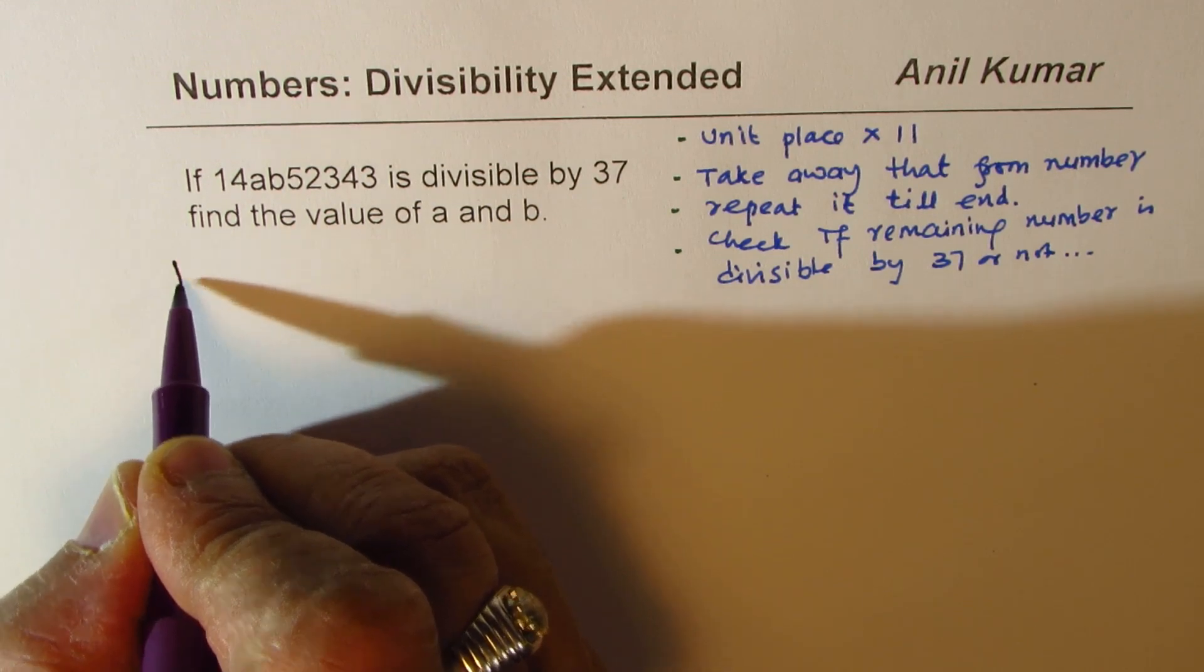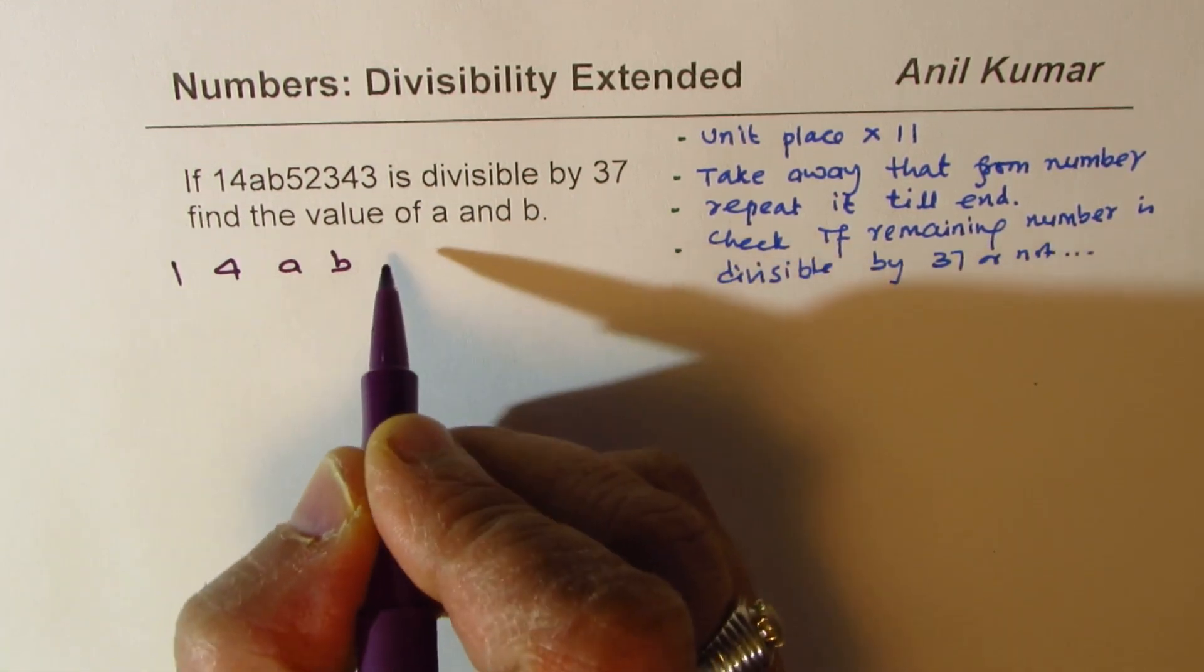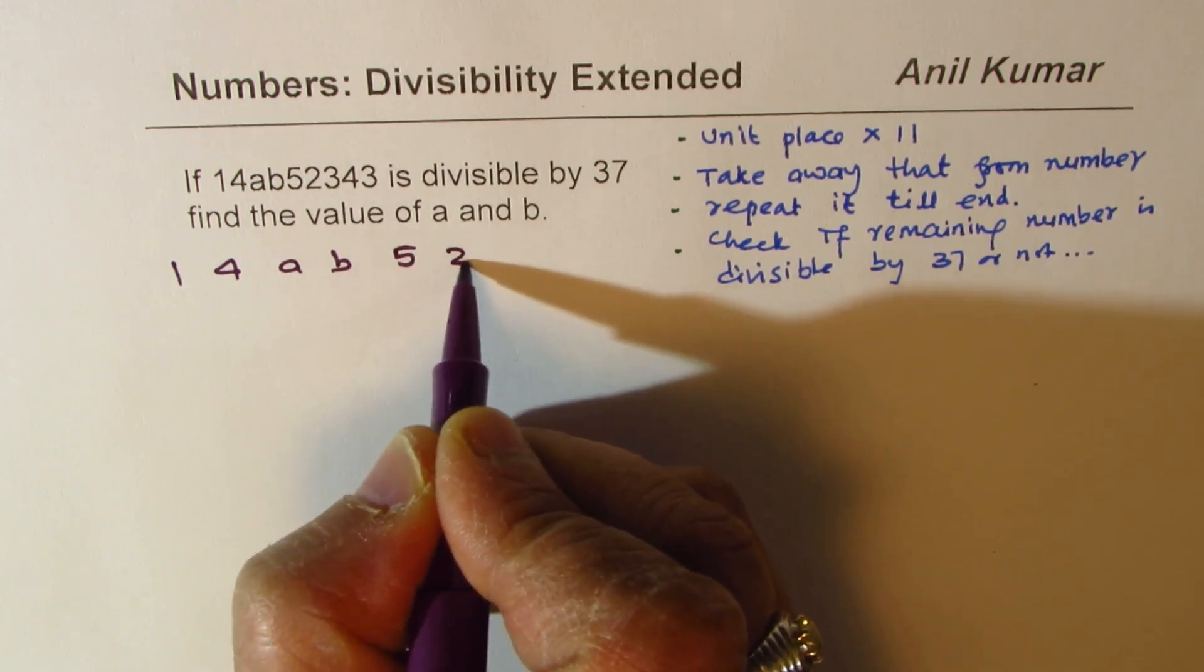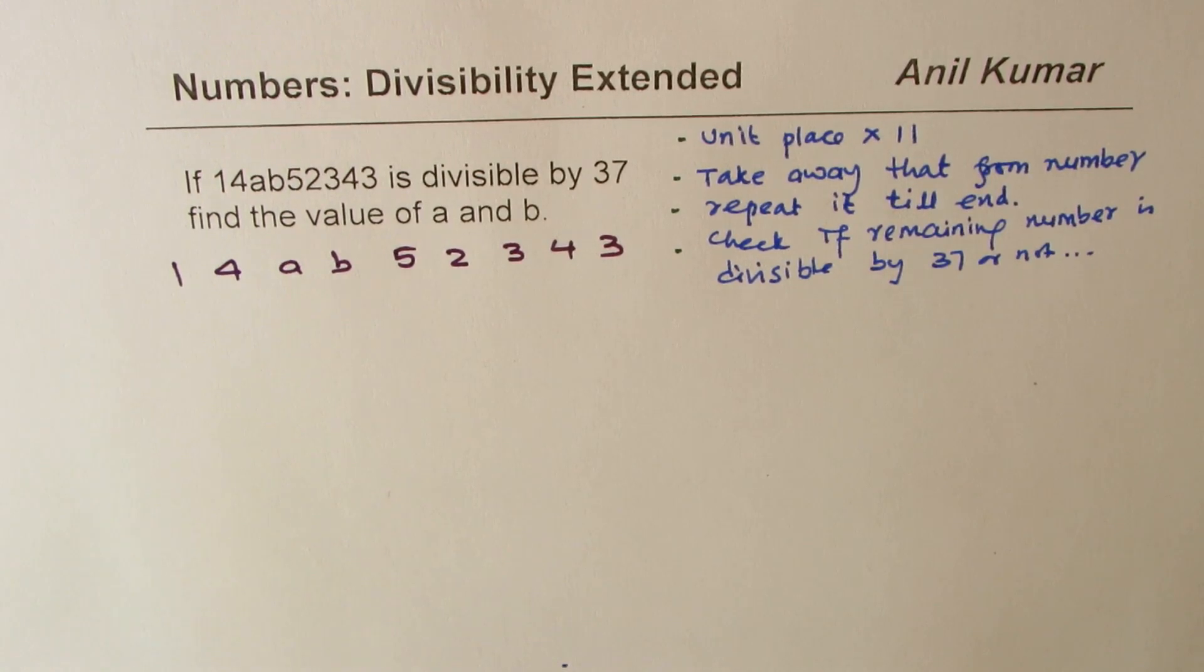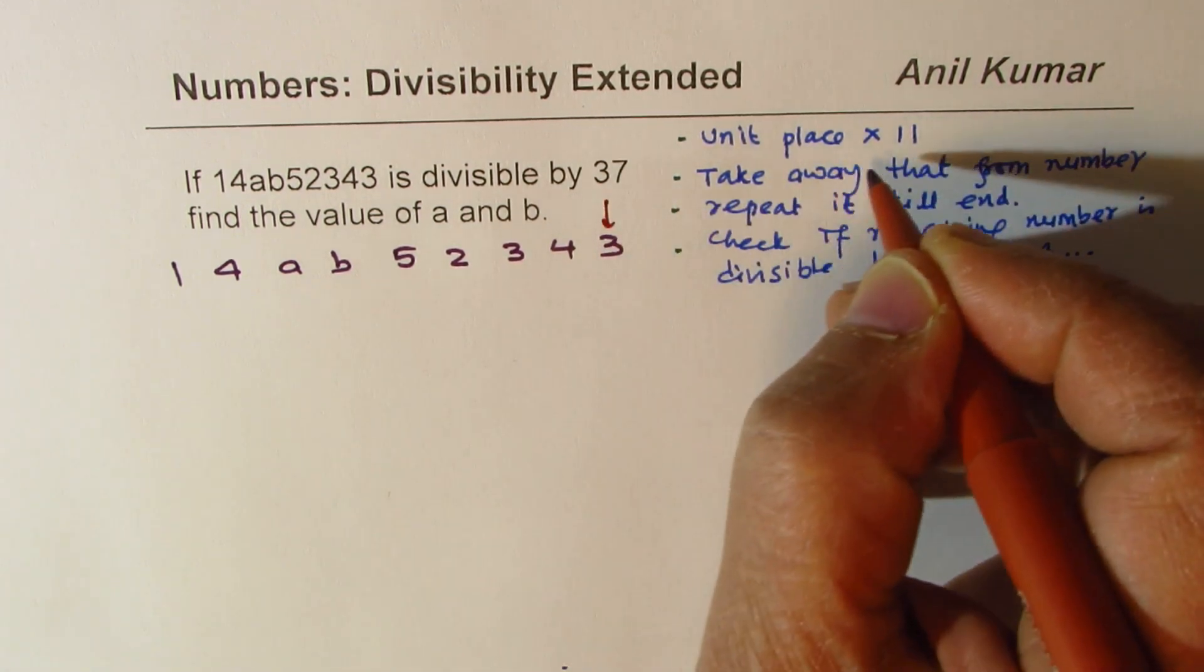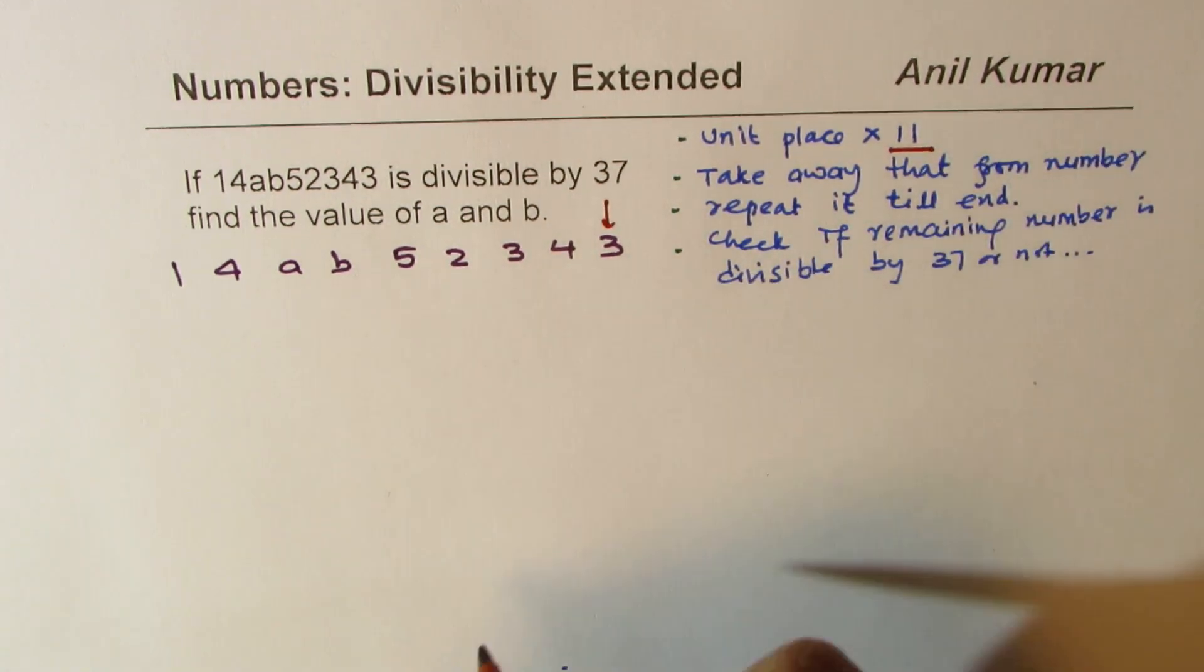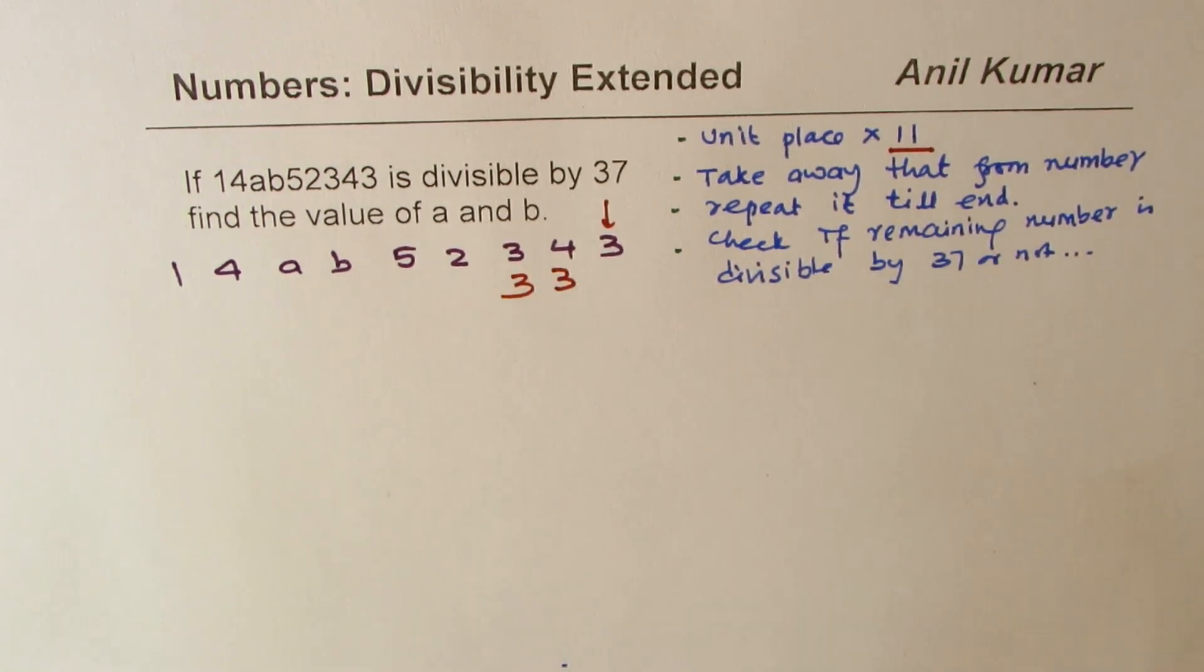So we have this beautiful number here: 1, 4, A, B, 5, 2, 3, 4, 3. The first step involved is we will multiply 3 by 11, so we get 33. And we'll take away this 33 from the remaining number. Do you see that process? So that is the first step.